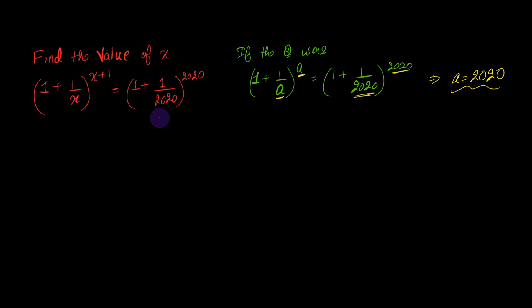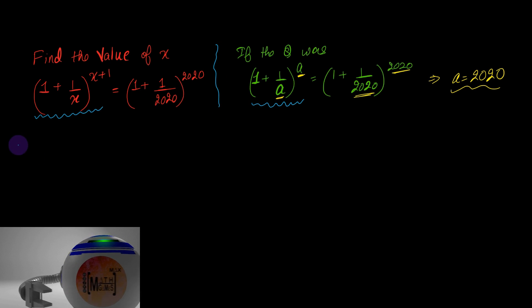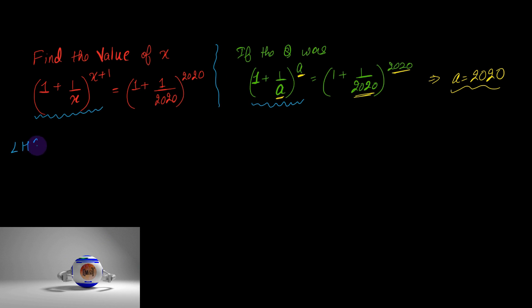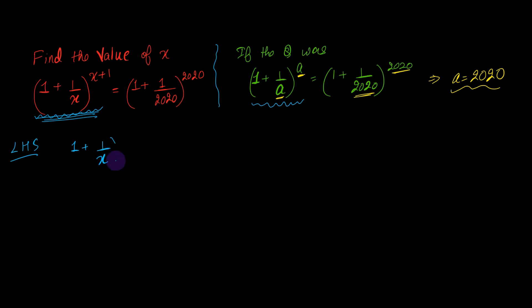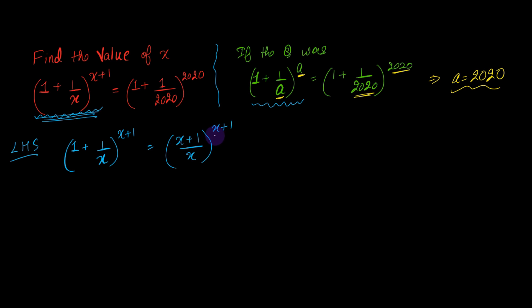So now let us see how to solve this. What I am going to do is try to write this expression in a comparable form. Focusing on the left-hand side only, we observe it is written as (1 + 1/x)^(x+1), which can be written as ((x+1)/x)^(x+1). We observe that the power equals x+1 and the numerator also equals x+1.